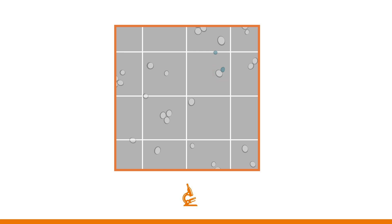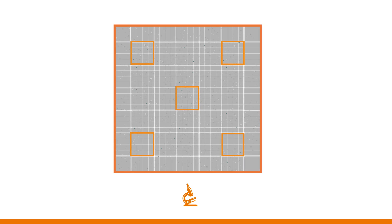Record the total cell count and total number of dead cells. Move on to the next 4 by 4 square until all 5 are completed.